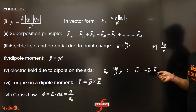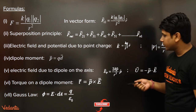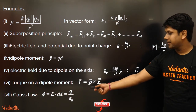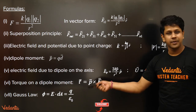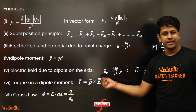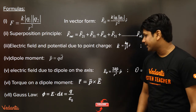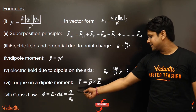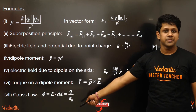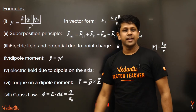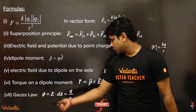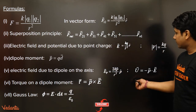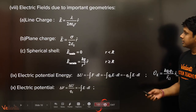If you have a dipole, the torque on a dipole is given by τ = P × E. The dipole moment is P. Gauss's law is given by ∮ E · dA = Q_in / ε₀. The flux Φ = ∮ E · dA.